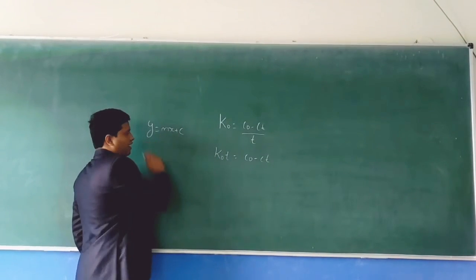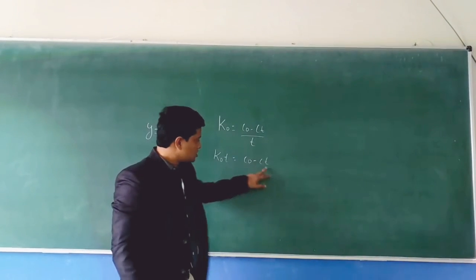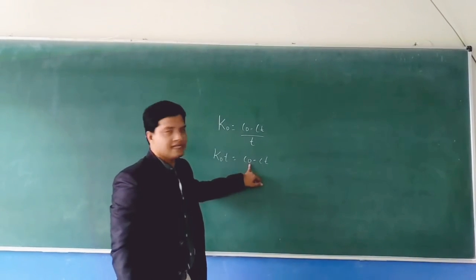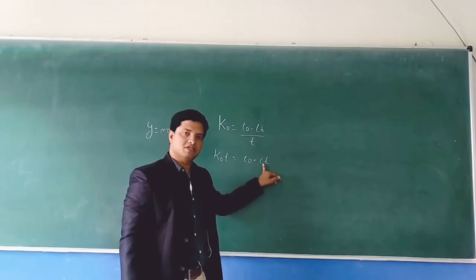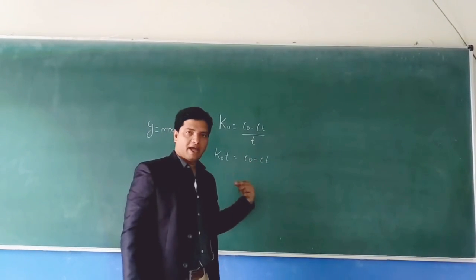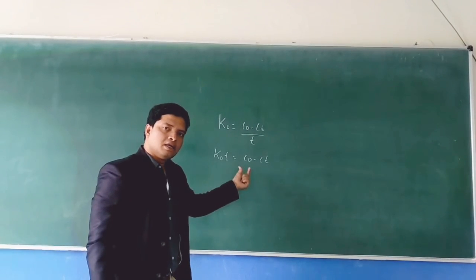What we need is C and y. Here we have two terms. In the concentration, the known concentration is initial concentration and unknown concentration is concentration at time t. So take the unknown as y-axis and the known initial concentration as C.